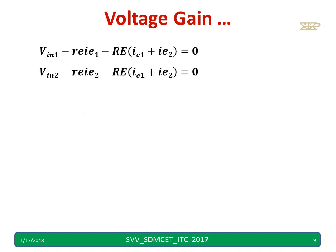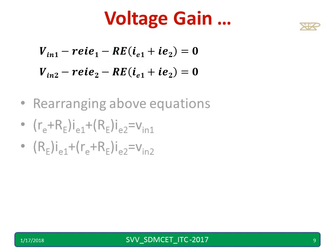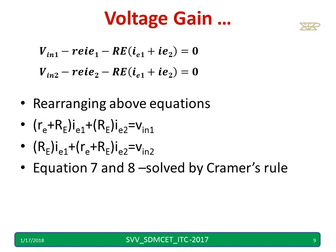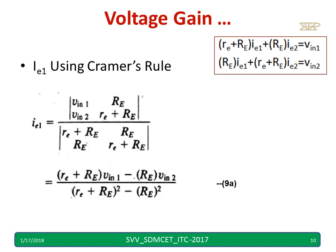The same equations are written again. I have rearranged so that IE1 is multiplied by RE plus RE in brackets, yielding two rearranged equations numbered 7 and 8. These two equations can be solved using Cramer's rule.